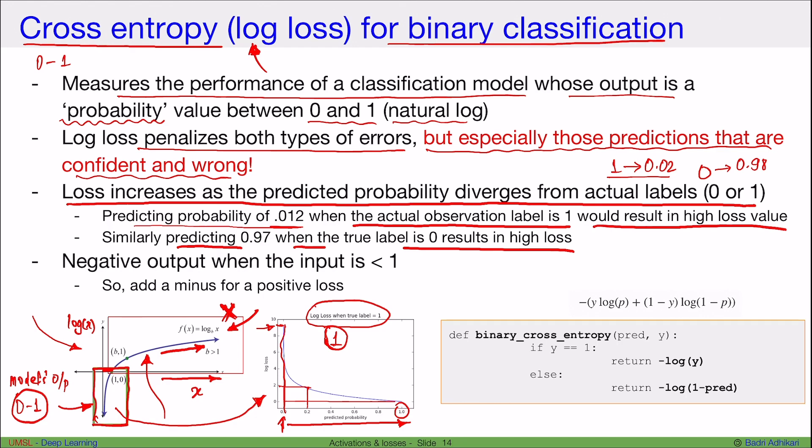Now since log of input that is less than 1 is actually negative, we have to add a minus sign in front of the cross-entropy function. The cross-entropy function has a minus sign so that the loss actually comes out positive. So that's why we see the minus sign in front of the cross-entropy loss.